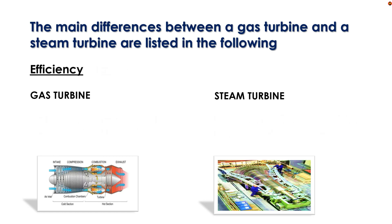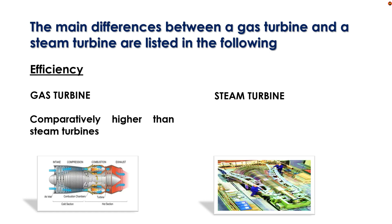Efficiency: Gas turbine efficiency is comparatively higher than steam turbine. Steam turbine efficiency is lower than gas turbine.